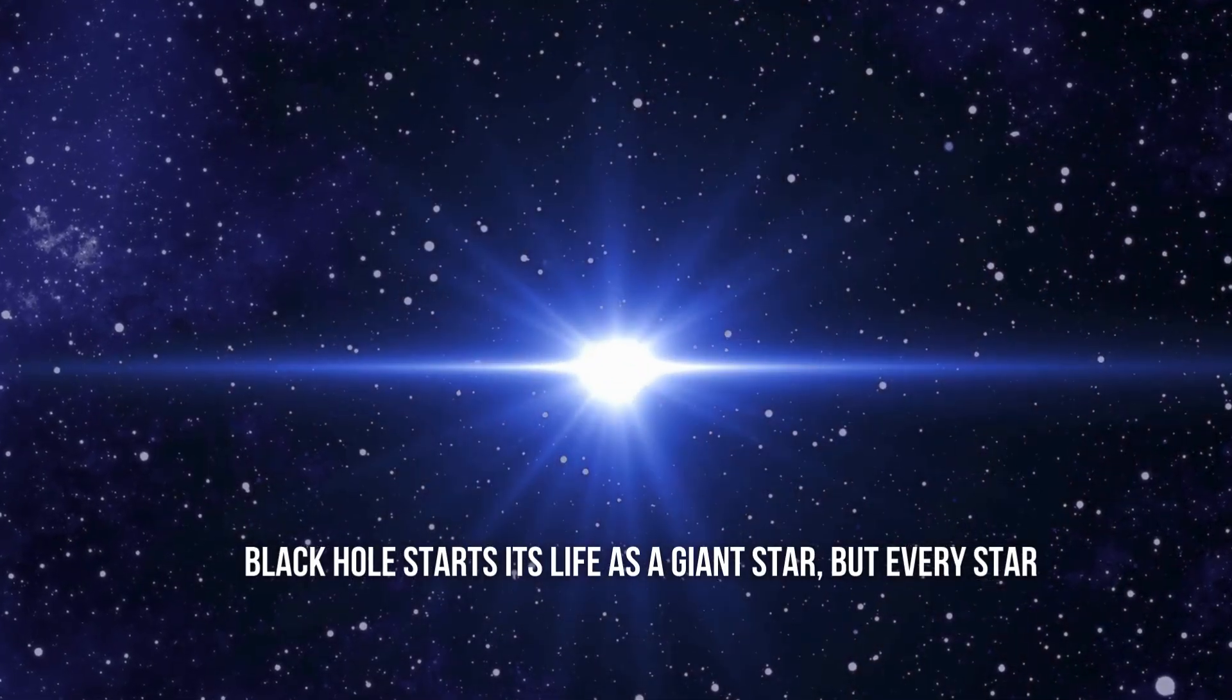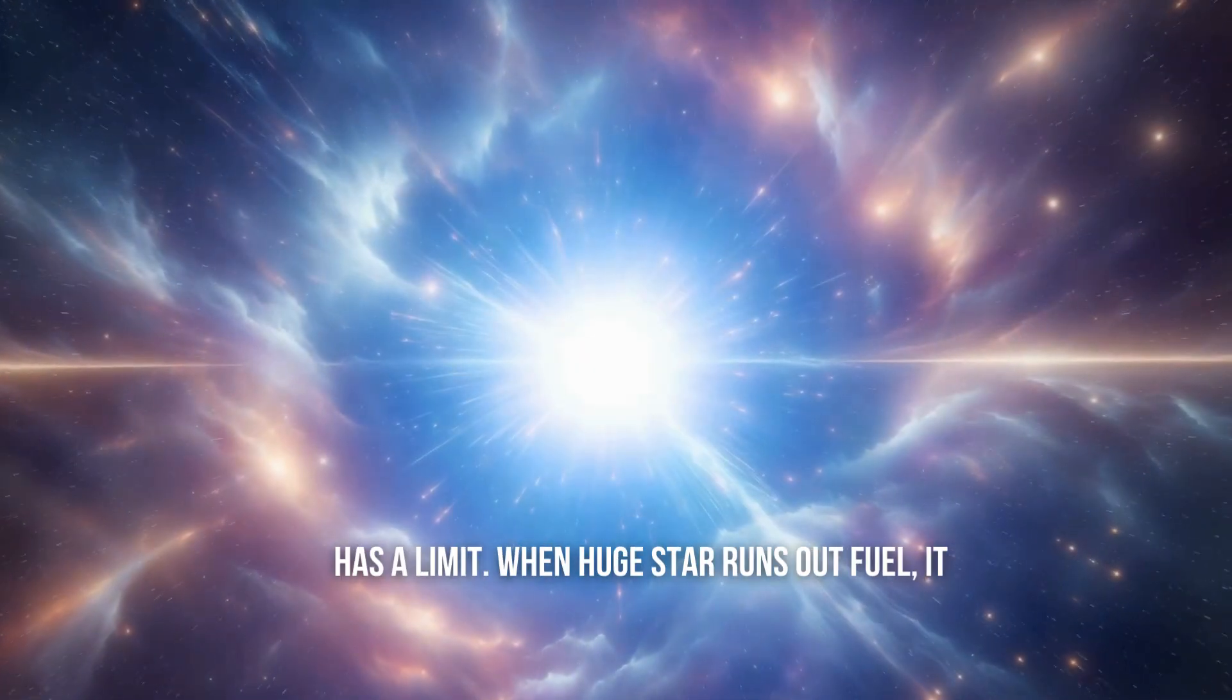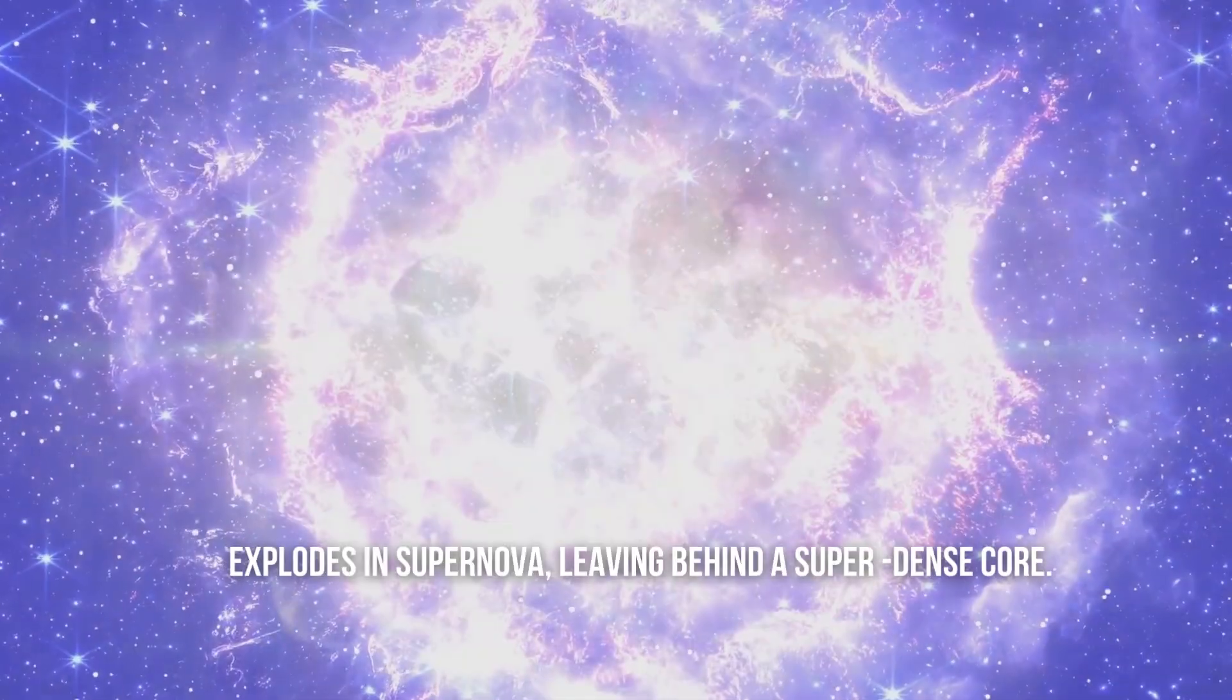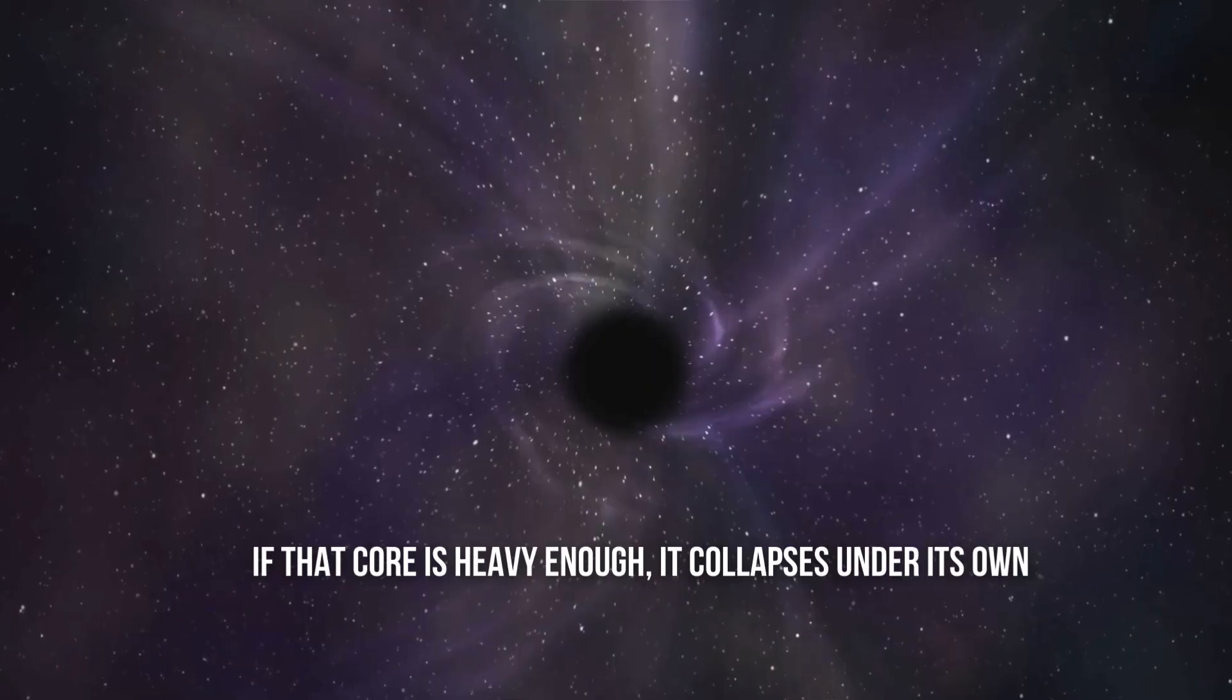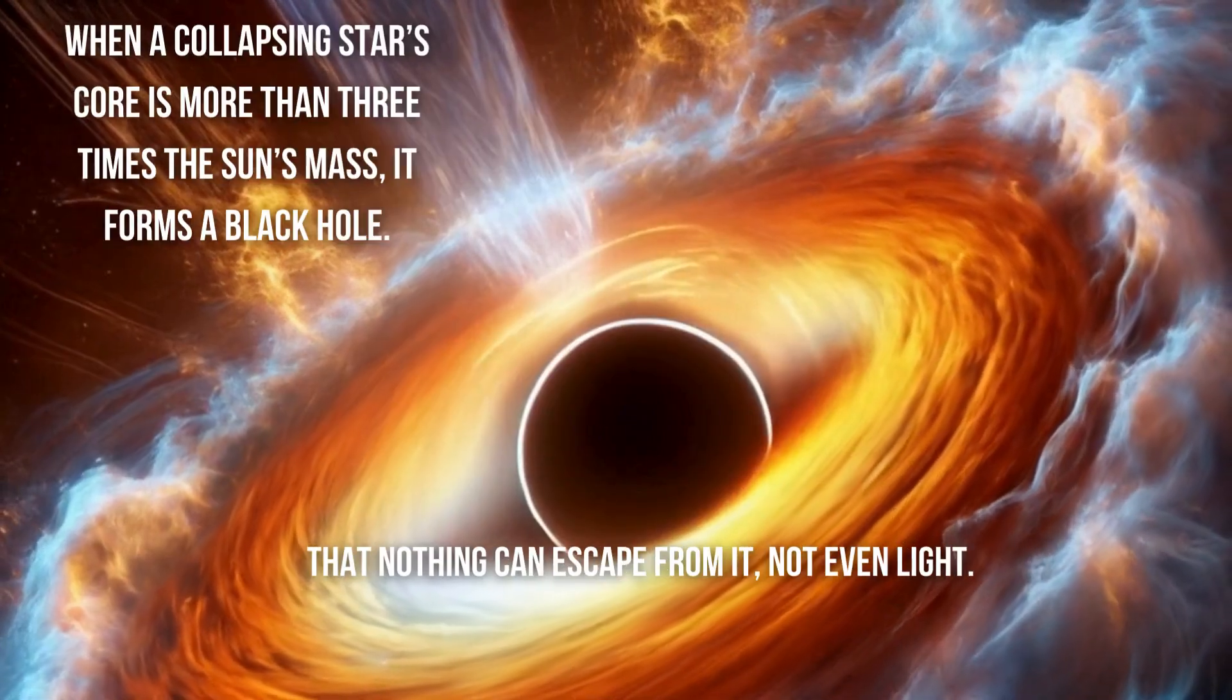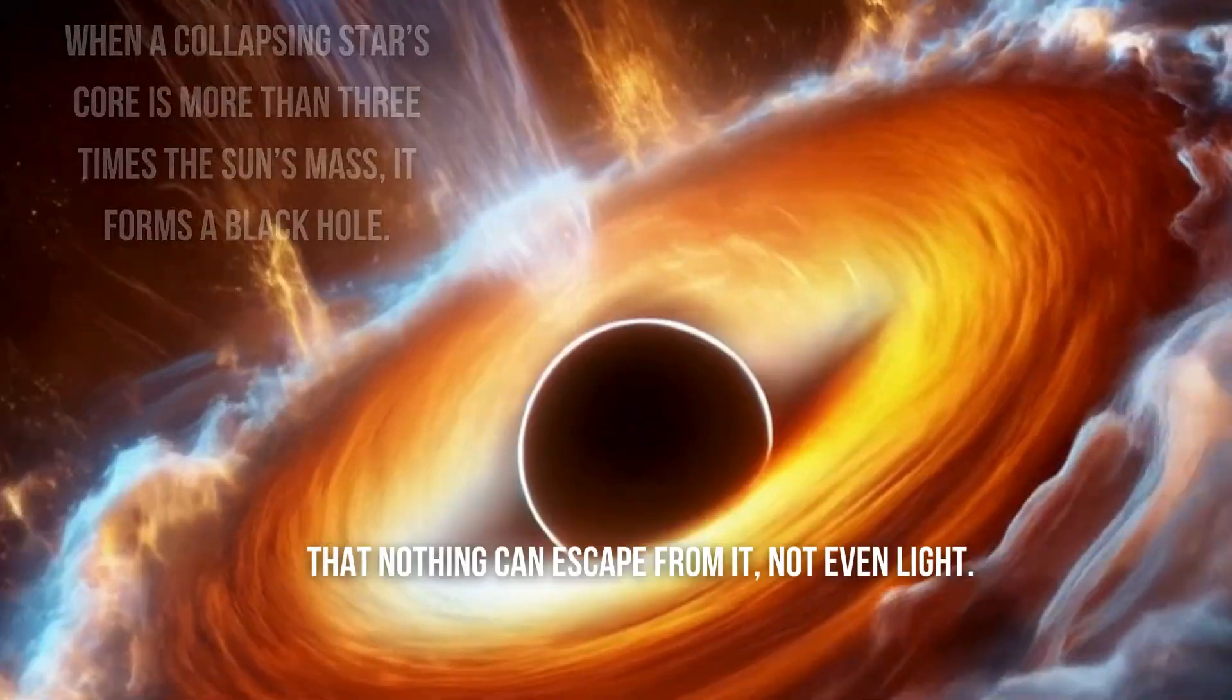A black hole starts its life as a giant star, but every star has a limit. When a huge star runs out of fuel, it explodes in a supernova, leaving behind a super-dense core. If that core is heavy enough, it collapses under its own gravity, forming a black hole—an object so powerful that nothing can escape from it, not even light.